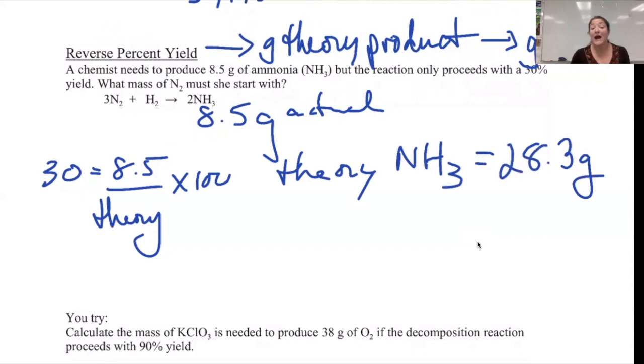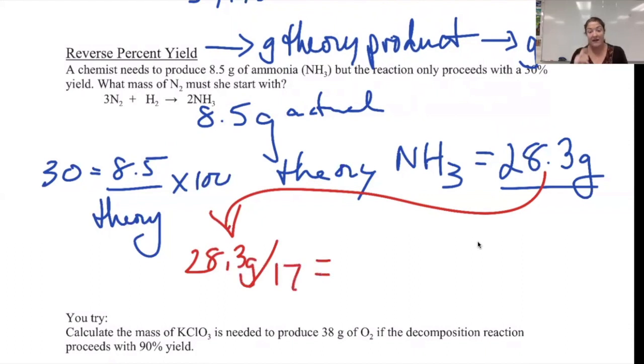We have to try to make 28.3 grams to actually get out 8.5. So I'm going to then use this grams of NH3 to calculate the grams of N2. So 28.3 grams of NH3 divided by the molecular weight of NH3, which is 17, gives me 1.67 moles of NH3 as our goal.